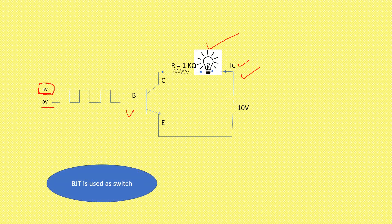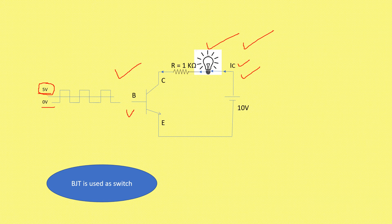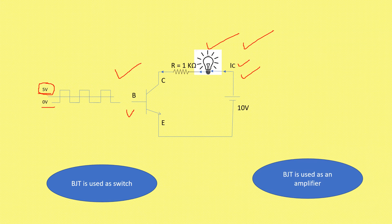Now, if you want to work the transistor in active mode, we have to give an intermediate value. This is shown by a continuous line, indicating that the voltage applied at the base is in between 0 and 5 volts — we can say it is 2.5 volts. Due to this, IB is moderate, IC is also moderate, and current is continuously flowing in the bulb. That particular region we name as active. The operation of the BJT in active mode is used in the amplifier. So BJT can be used as a switch or BJT can be used as an amplifier.